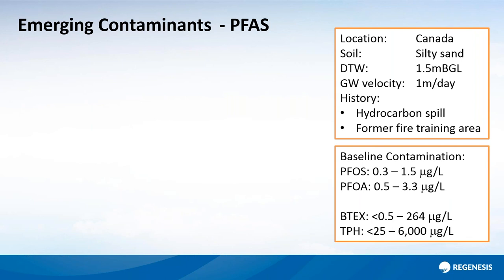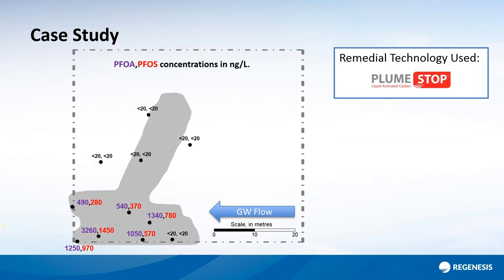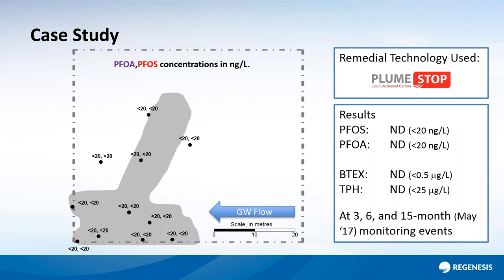This is the first ever in situ remediation of PFAS in the world. It was aimed at PFOS and PFOA. The site made furniture and had a fire training area. The idea was initially to deal with the petroleum hydrocarbon plume using Plume Stop, but PFAS contamination was also noticed. After application targeting PFAS, after three months we were at non-detect; at 15 months, still at non-detect. We are capturing and adsorbing that contamination. PFOS and PFOA are some of the longer chain PFAS compounds and are easier to adsorb.